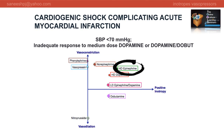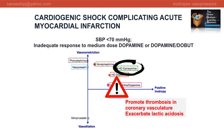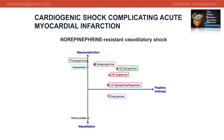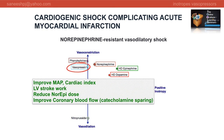How about epinephrine? It can exacerbate lactic acidosis, cause tachyarrhythmias, and promote thrombosis especially in the coronary vasculature. Vasopressin may be effective in norepinephrine-resistant vasodilatory shock, improving mean arterial pressure and cardiac index, and reducing the need for norepinephrine — resulting in reduced cardiotoxicity and malignant arrhythmias.